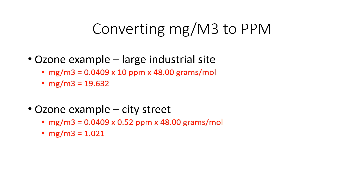Now looking at a city street example for ozone — a city street has mobile sources, emissions from factories, chemical plants, plus cars, buses, and trucks. In this example, the sample came back at 0.52 ppm. Using the same exact formula, we get 1.021 milligrams per meter cubed.